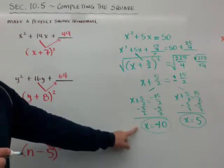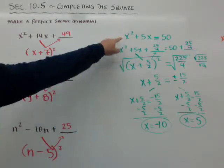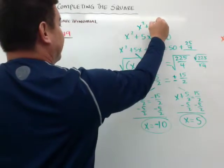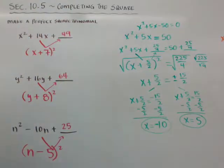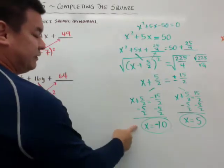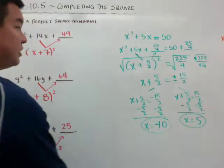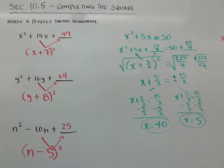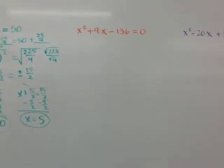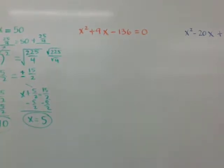Now, if they come out to nice integers, I could have solved that by factoring — if I moved the 50 over to get x squared plus 5x minus 50 equals 0, it would factor to x plus 10 times x minus 5. But this is just another way if you don't know how to factor. So here's another example — I can see that one might not be factorable, but if you can't see how to factor it, here's how you do it by completing the square.